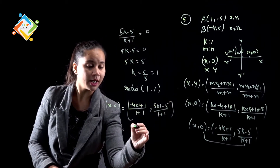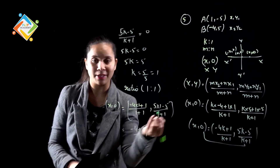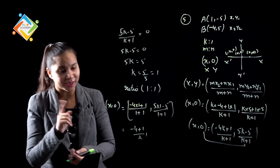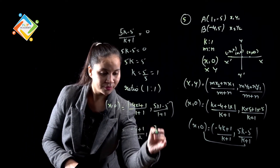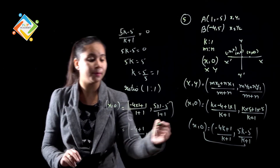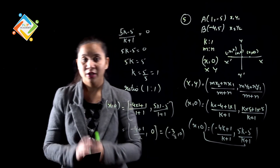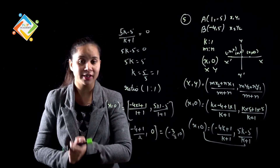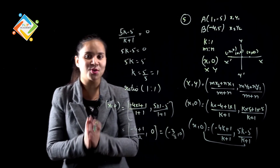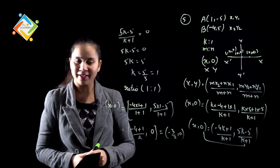यहाँ पर देखे: 5×1 - 5 upon 1+1. तो यहाँ आगे (minus 4 + 1)/2 कॉमा (5-5)/2. 5 में से 5 minus करेंगे तो 0 आगा, और 0 में 2 का divide करेंगे तो 0 आगा। तो यहाँ आएगा (minus 3)/2 कॉमा 0. तो जो coordinate है वो (-3/2, 0) हैं — यह वो coordinate है जो 1:1 में divide करते हैं।